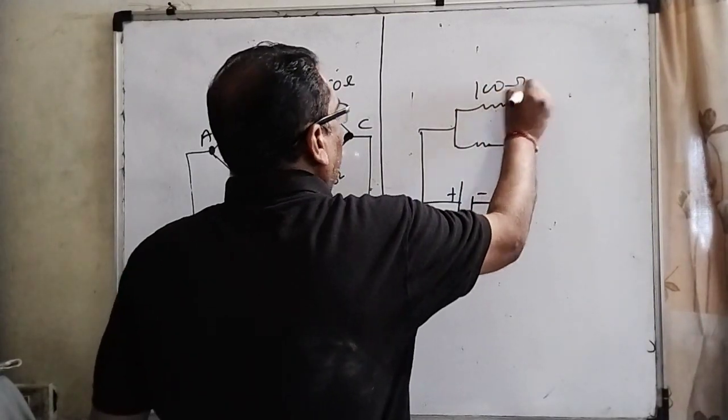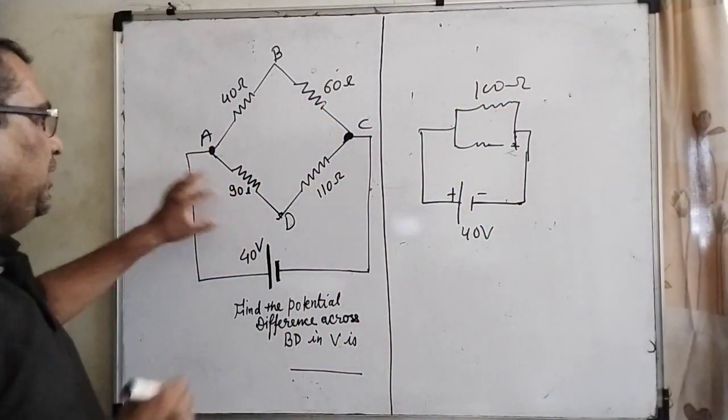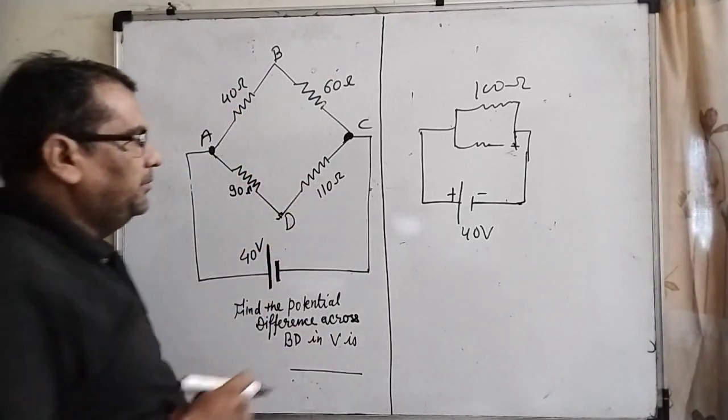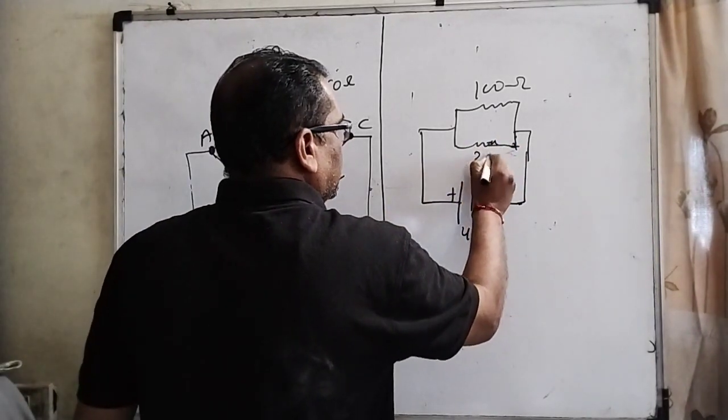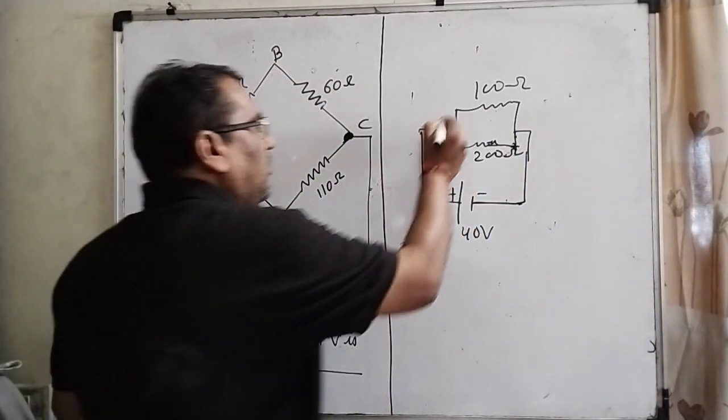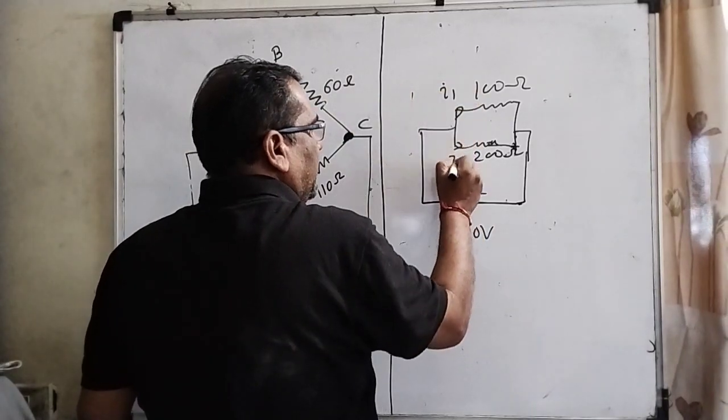100 ohms. And A to D that is 90 ohms, and here 110. The total resistance, equivalent resistance, is 200 ohms. Right? And we have to find out the current I1 and I2.